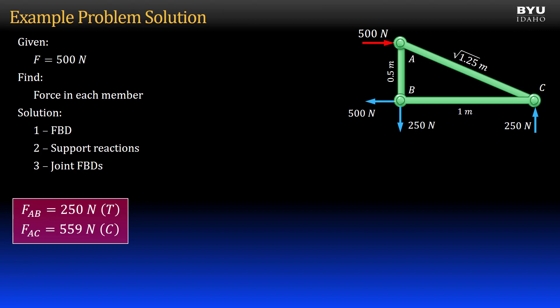To get the force in member BC, I can use a free body diagram of joint B or joint C. I will use C, since it has the fewest forces acting on it. Since I know that force AC is equal to 559 Newtons in compression, I revise my free body diagram like this.